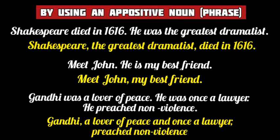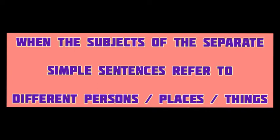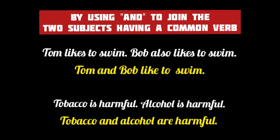In the last example, the second and third sentences have descriptions of the noun 'Gandhi,' so these two sentences are converted to noun phrases in apposition: Gandhi, a lover of peace and once a lawyer, preached non-violence. But how will you combine two separate simple sentences whose subjects refer to different persons, places, or things? If the separate simple sentences have different subjects but a common verb, we may join them by using AND. For example, the sentences have different subjects Tom and Bob but the same verb 'likes,' so we join the two subjects using AND: Tom and Bob like to swim. Such a subject is known as a compound subject. Similarly, 'tobacco is harmful' and 'alcohol is harmful' are combined as: tobacco and alcohol are harmful.